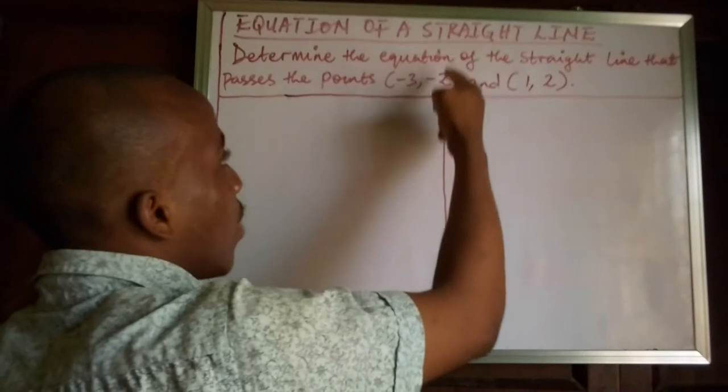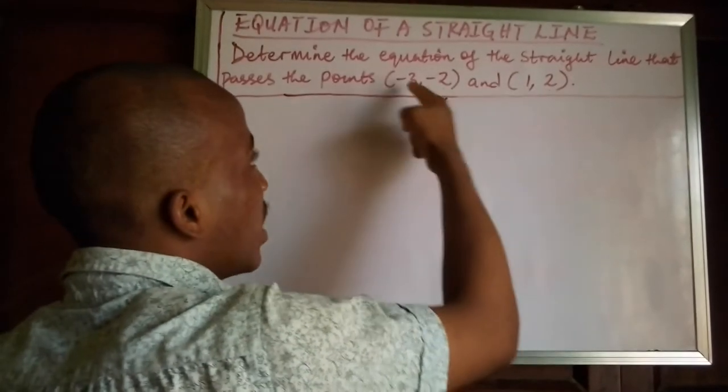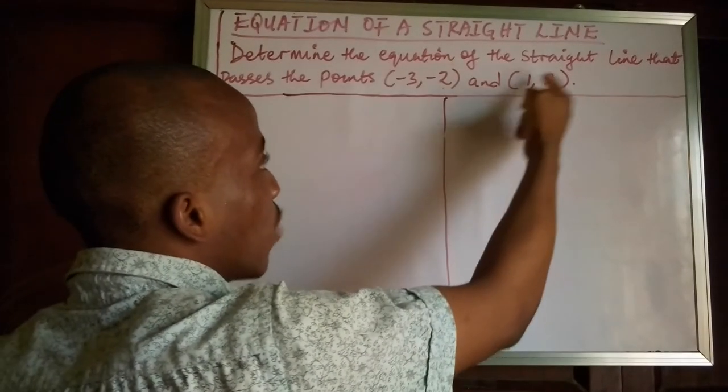So this is our x and this is our y coordinate, this is our x and y. So this is x1, this is y1, this is x2 and this is y2.